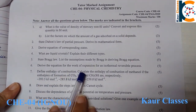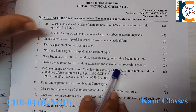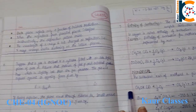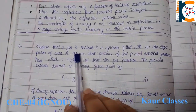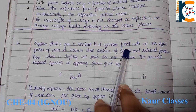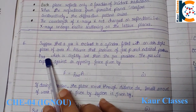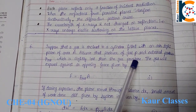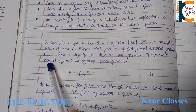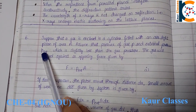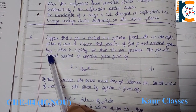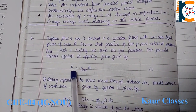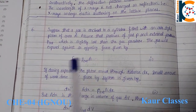Suppose any gas is enclosed in a cylinder fitted with an airtight piston with area A. Assume that the pressure of the gas is P and the external pressure is P_ext. The external pressure is slightly less than the gas pressure. Then the force is given by pressure into area — this is equation number one.